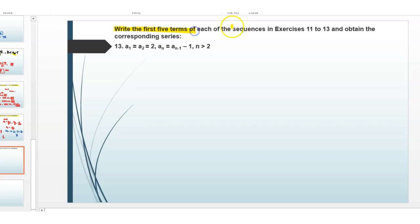Today's question is: write the first 5 terms of each of the sequences in exercise 11 to 13 and obtain the corresponding series, where a1 is equal to a2 which is equal to 2, and the nth term is a(n-1) minus 1 where n is greater than 2.